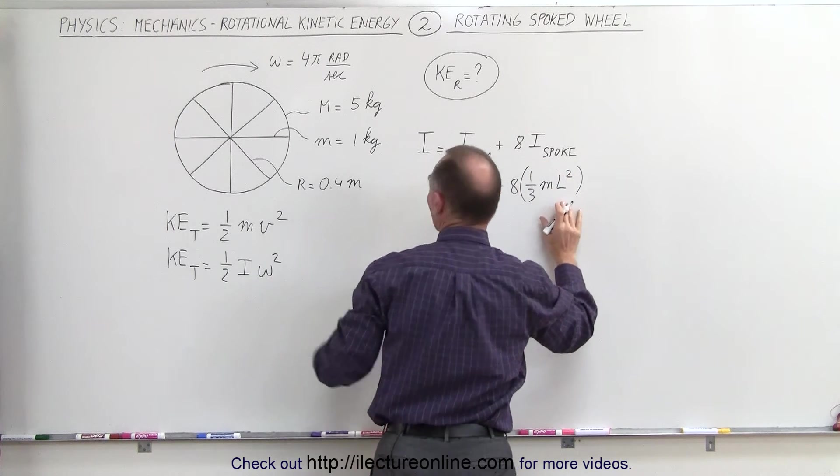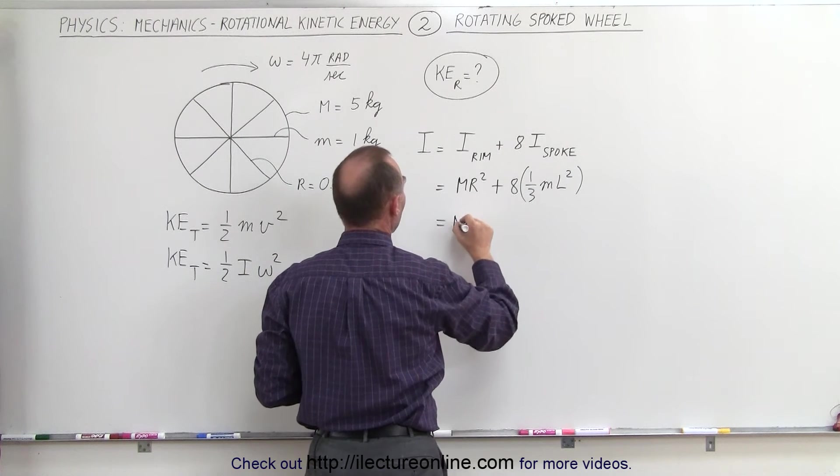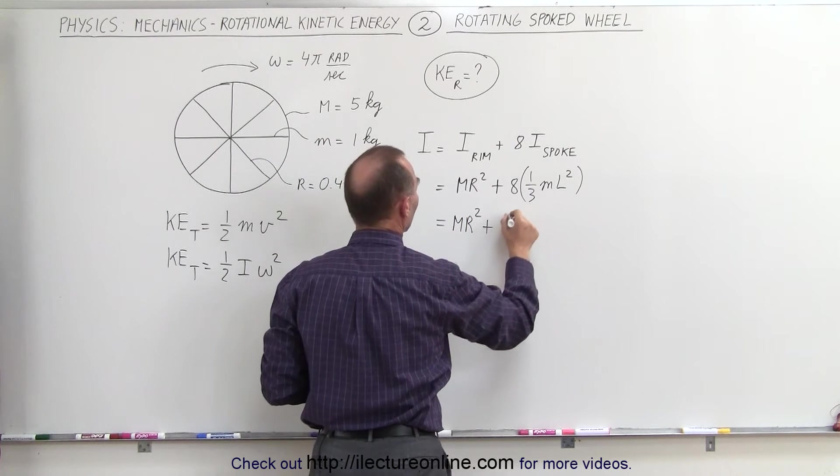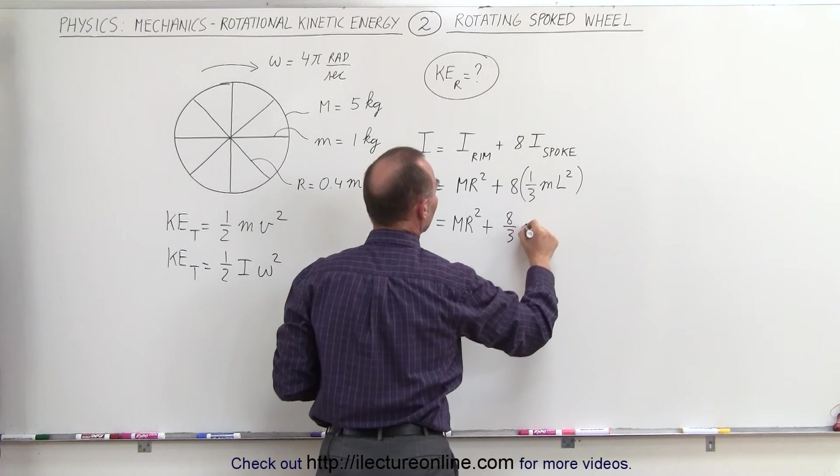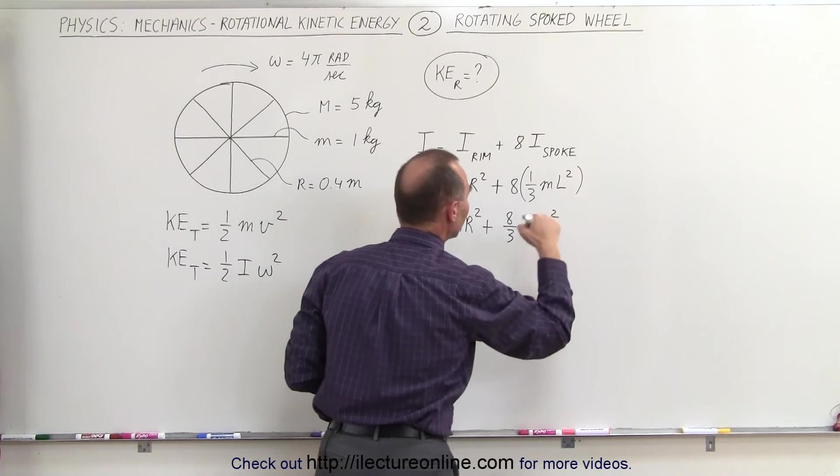And of course, in this case, the length of each spoke is equal to the radius of the wheel, so we can write this as MR² plus 8/3 little m for the mass of the spoke times r², because l is equal to r.